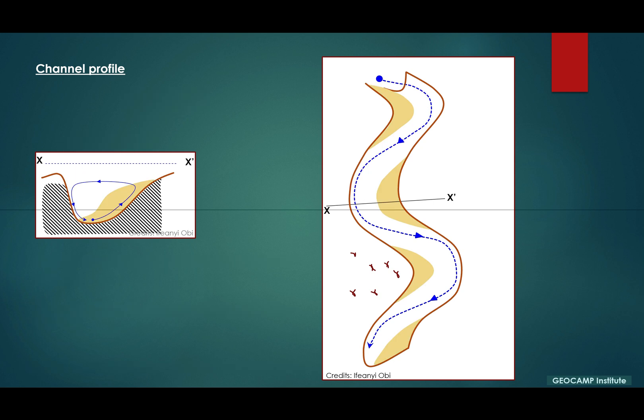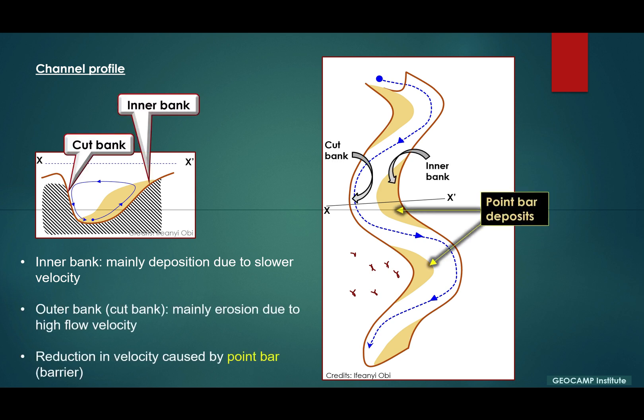So this is still on a channel profile. We had mentioned earlier that the reduction in velocity where you have the inner bank is actually what causes the deposition of sediments at that bend, and that creates what is called the point bar.